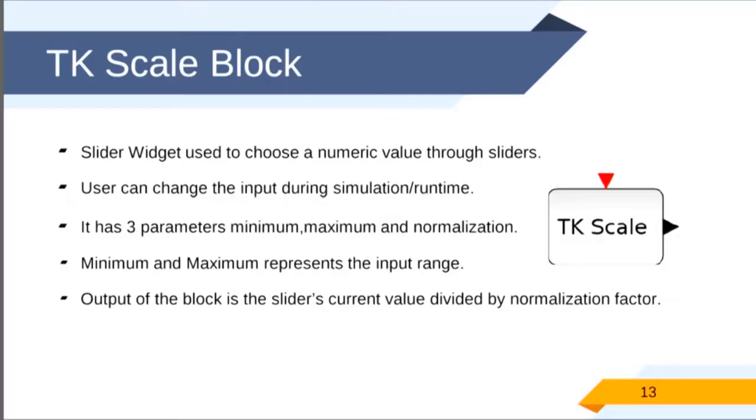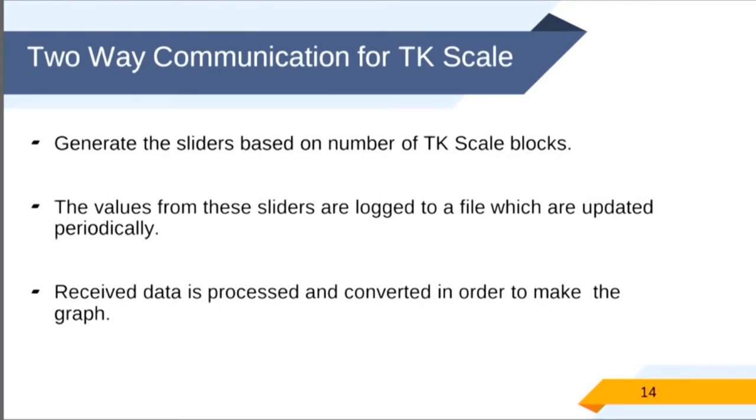We implemented two-way communication for TK scale. First I will explain what is TK scale block. TK scale block is a scale widget which allows user to choose a numeric value to the slider. User can change the input during simulation or runtime. Mainly TK scale has 3 parameters: minimum and maximum normalization. Minimum and maximum represent the input range. The output of the block is determined by the slider current value divided by the normalization factor.